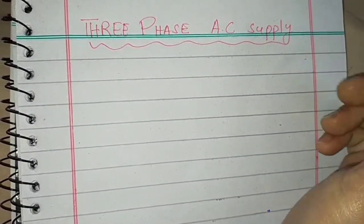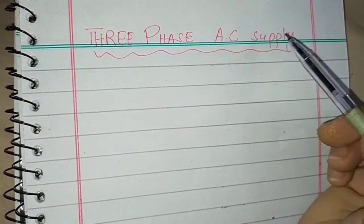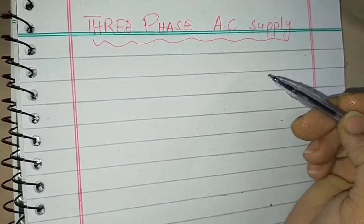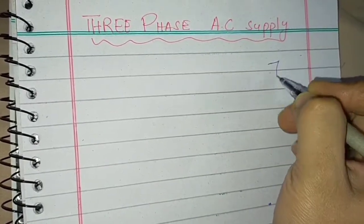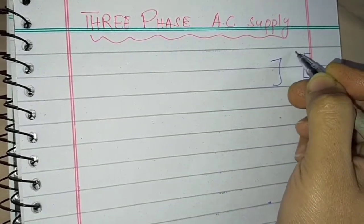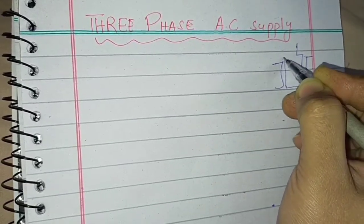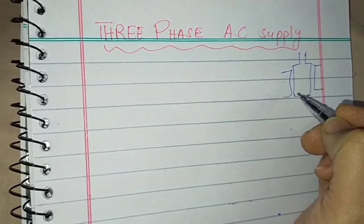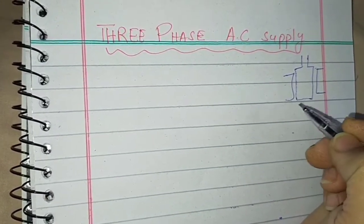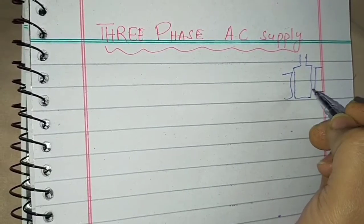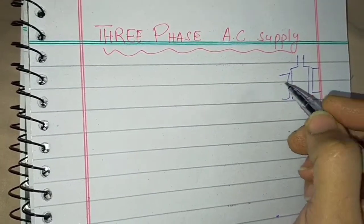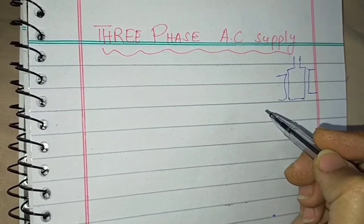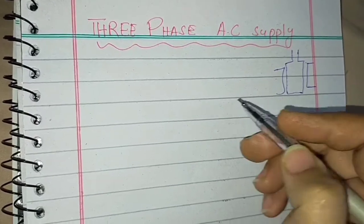Assalamu alaikum students. This is our next topic, that is three-phase AC supply. We were having a single coil in the case of single-phase AC supply. In the case of three-phase AC supply, three coils are attached, and those three coils are at an angle of 120 degrees with each other.